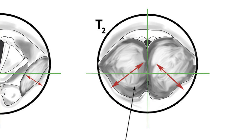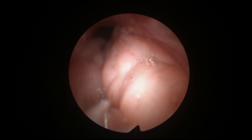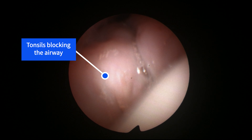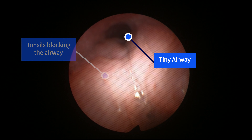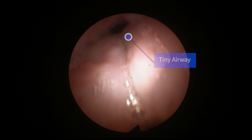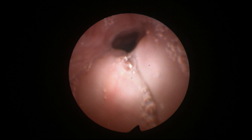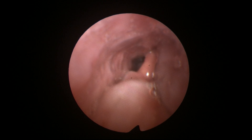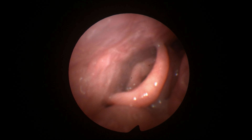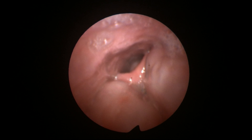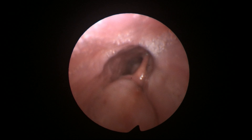Now we move on to T2 tonsils, where the tonsils are so large they take up more than 50% of the airway. These massive tonsils are completely obstructing the airway — the patient only has a tiny airway right at the top from which to breathe. This gentleman had obstructive sleep apnea and had been using CPAP for over eight years. After a ten-minute tonsillectomy operation he was completely cured and very happy.